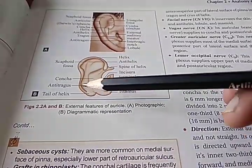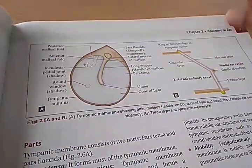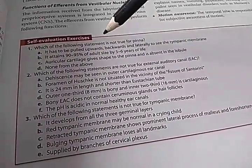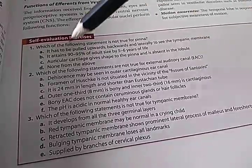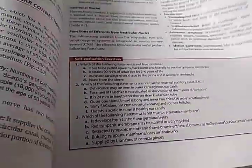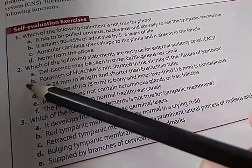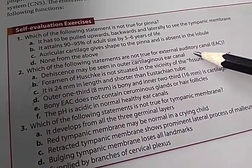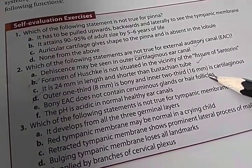They cover the isthmus, tail of helix, concha, anti-tragus. Here they are showing the tympanic membrane. The book has given some important questions — for example, 'which of the following statements are not true for external auditory canal?' And yes, they have given the answers. B and D are not true. Dehiscence may be seen in the outer cartilaginous canal; it is 24mm in length; bony EAC does not contain ceruminous glands or hair follicles; pH is acidic.